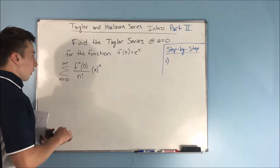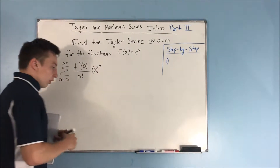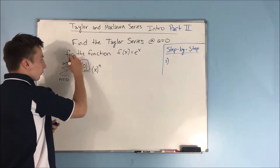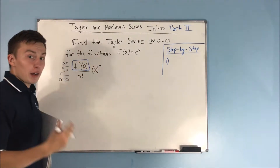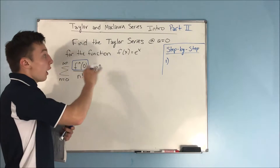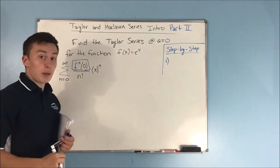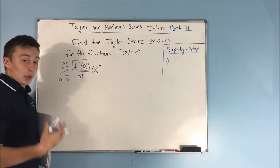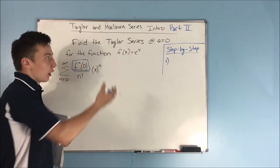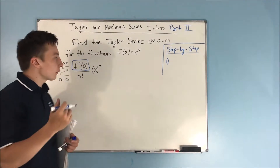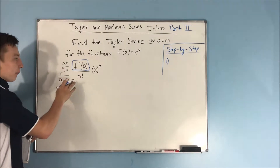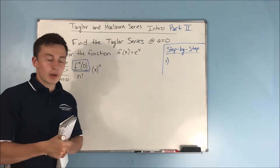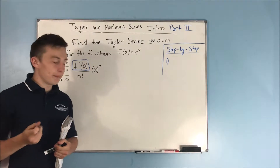We don't know the nth derivative of f at 0, and that's going to be something we're going to try to find first. Once we find that, we have our Maclaurin series — our Taylor series at a equals 0. And then we're going to be able to do stuff like find the radius and interval of convergence. So that's kind of an overview of what we're about to do.